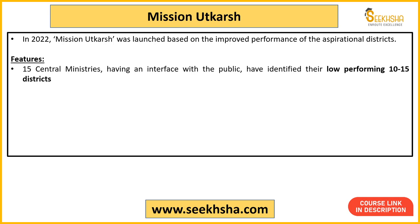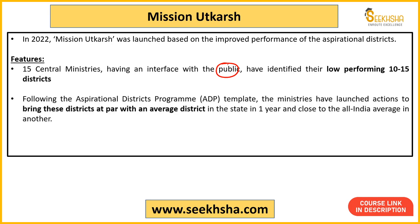There are 15 central government ministries that interact directly with the public. These 15 central ministries identified that in every state there are districts that are low performing. Every ministry has 10 to 15 low-performing districts to identify. Similar to the aspirational districts program, these ministries also follow up to help those districts grow by analyzing their performance in direct public interactions.